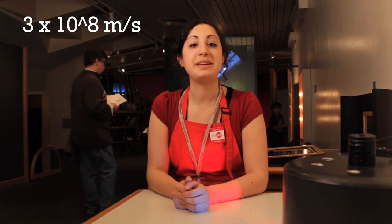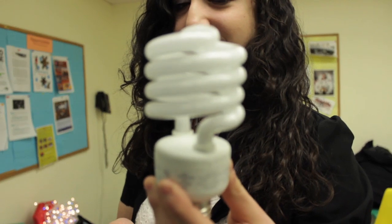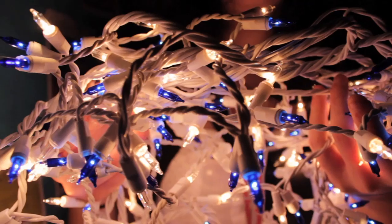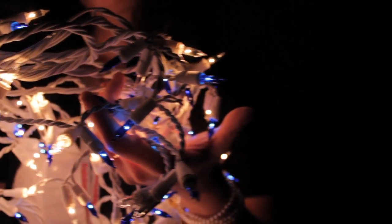Three times ten to the eight meters per second - that's a three followed by eight zeros, and it's the distance that light travels in just one second. The light coming from our light bulbs, candles, and cheesy Christmas decorations travels at a speed faster than any particle, object, or wave known to man.